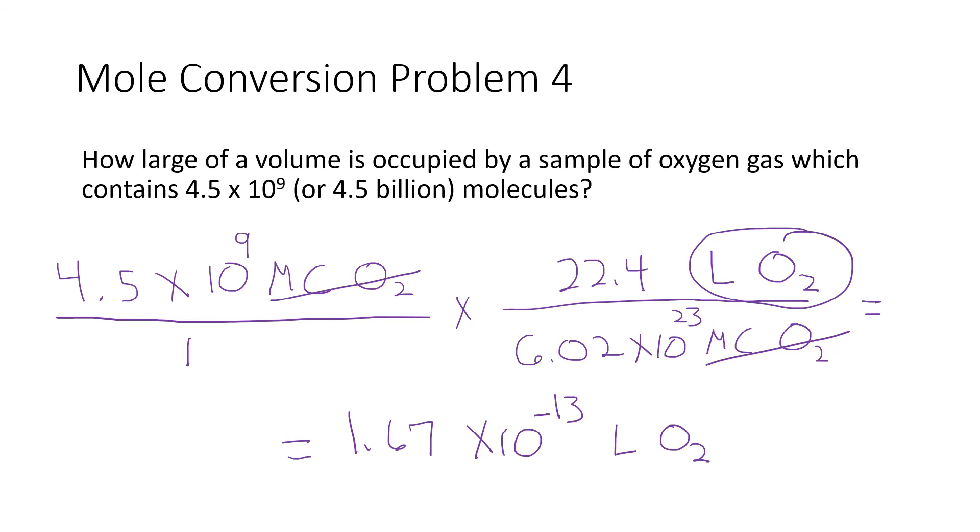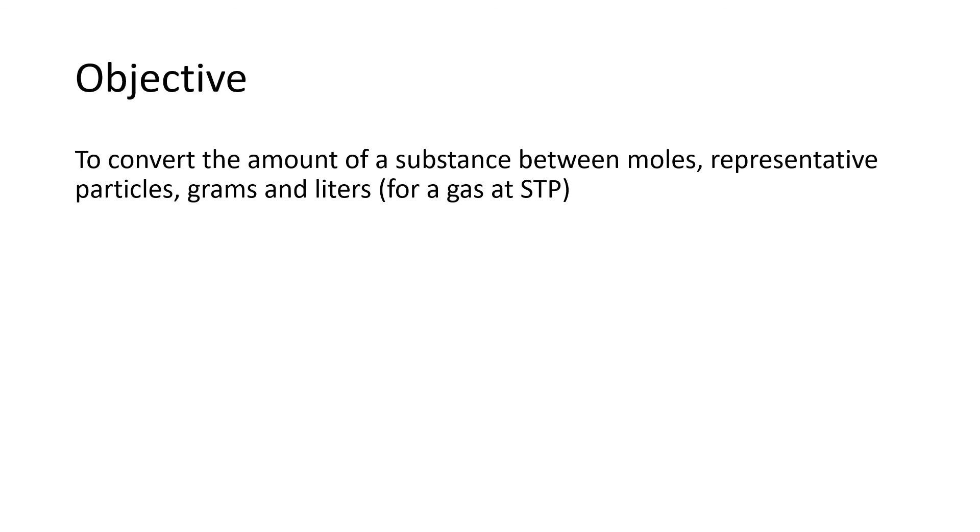Our objective was to convert substance between moles, representative particles, grams, and liters. Hopefully you're feeling pretty confident with this process at this time. We just have to build our own conversion factor using the radiation sign, and it's a good practice to also label each step with the chemical that's involved. For mole conversions it's the same chemical the whole way through, but as soon as we start reaction stoichiometry it's going to change, and it's really important that we track which chemical we have at each point along the way.